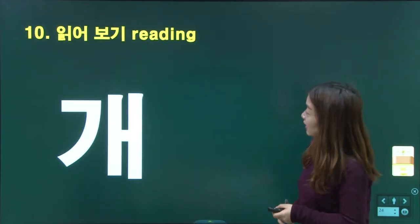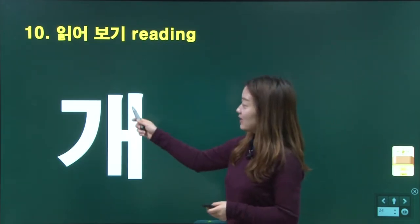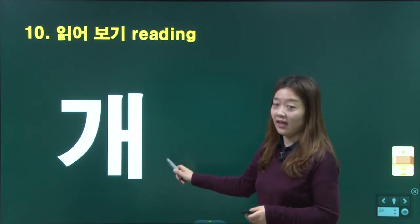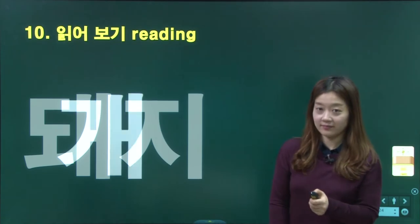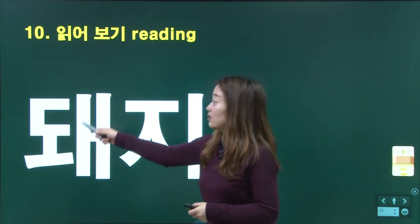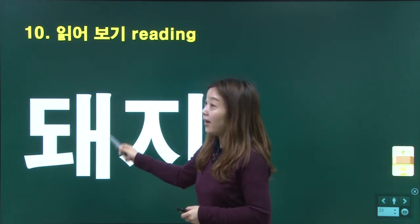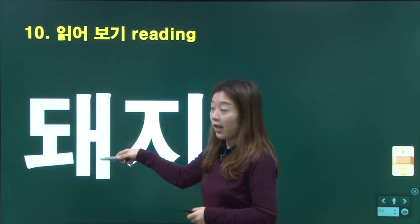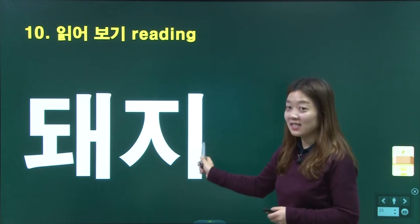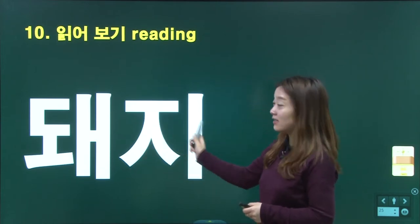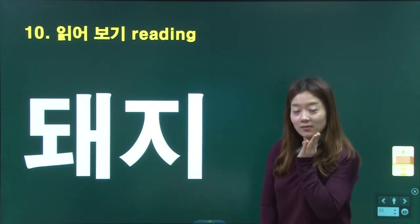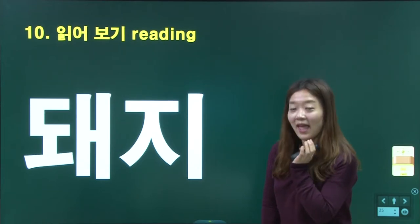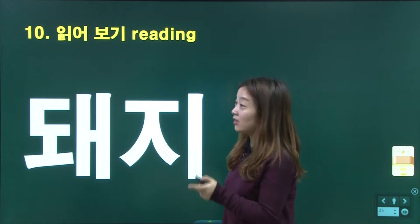Let's read. 개, 개, 개. 돼, 돼지. 돼지 means pig. What is the one before? 개 means dog. So we have dog and pig.